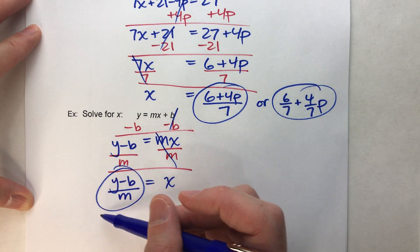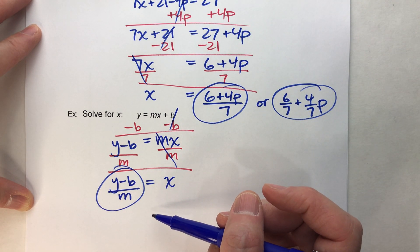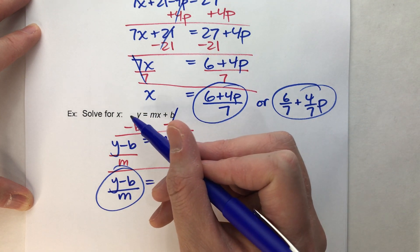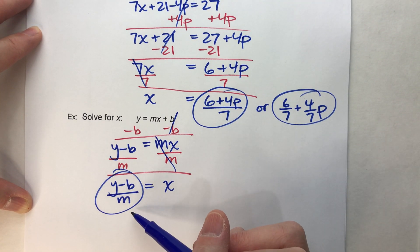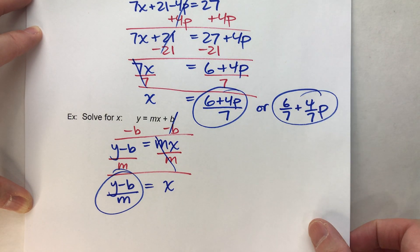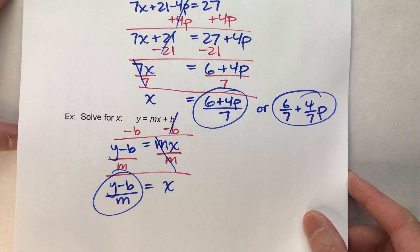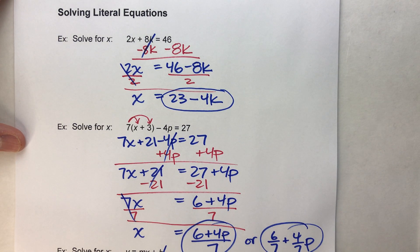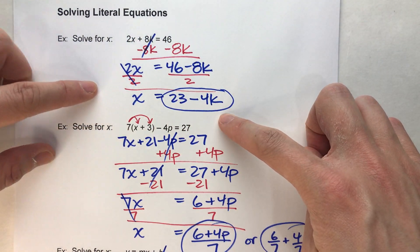And notice, when you solve for x, you get one big variable expression, and that's okay, because all we're doing is rearranging things to get x by itself to see what it would equal. So that's solving literal equations.